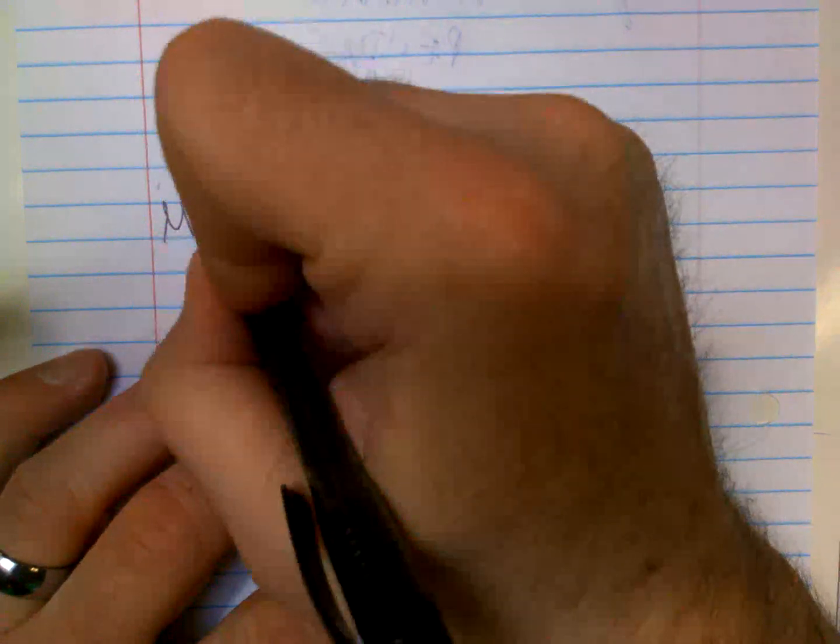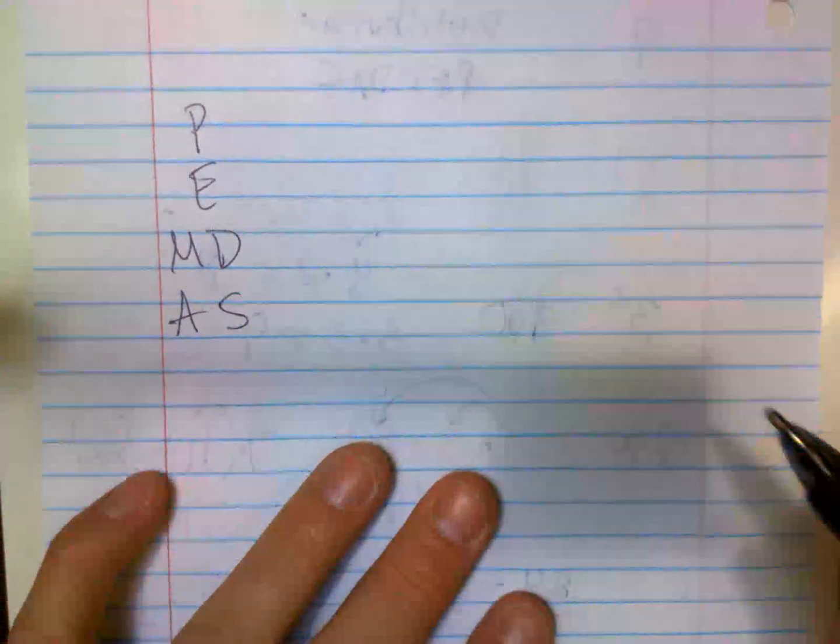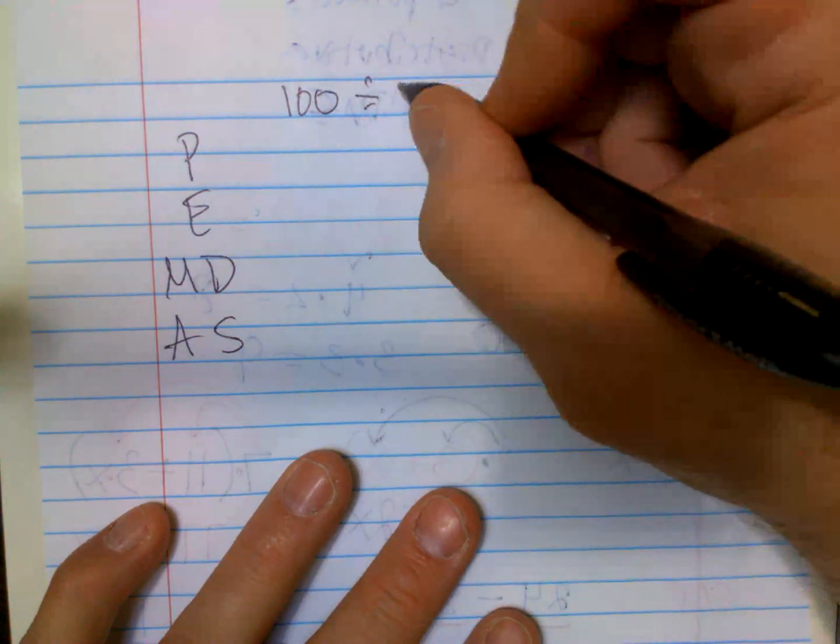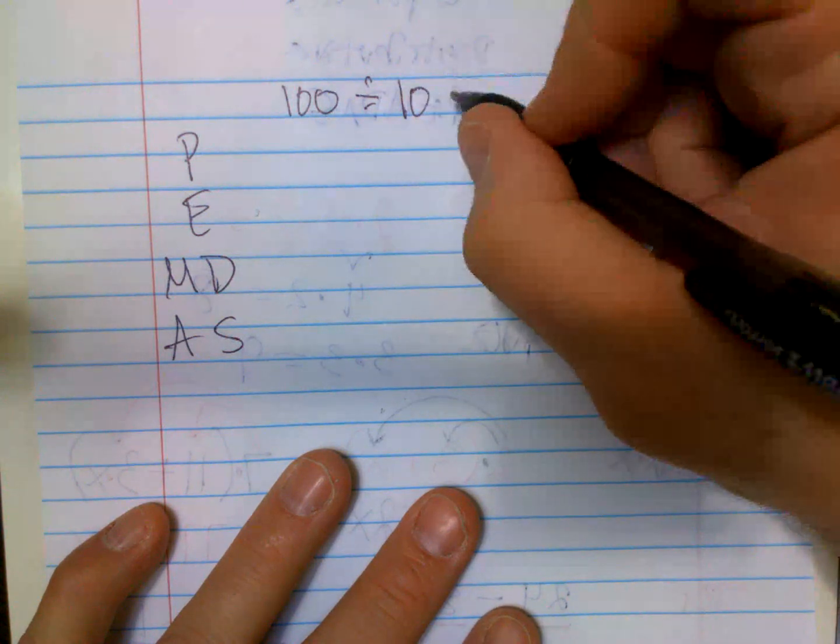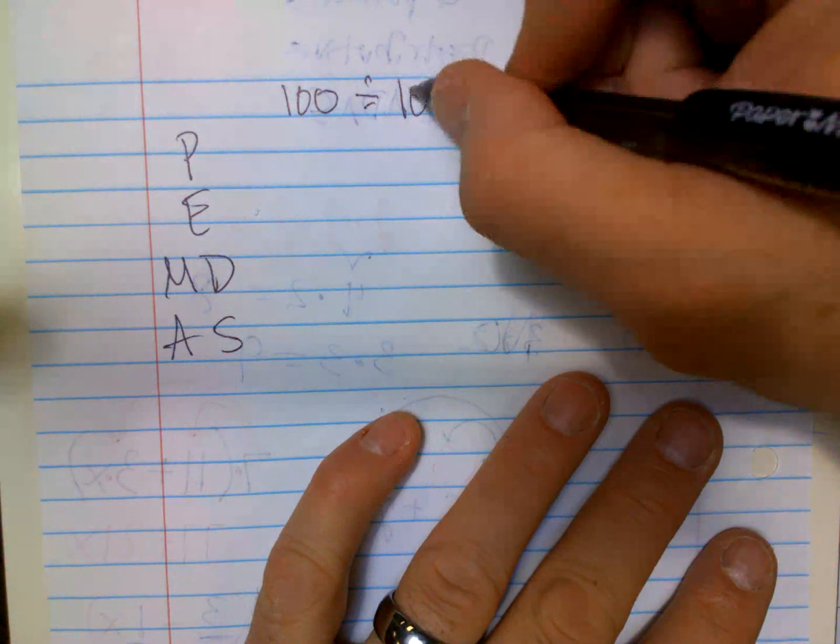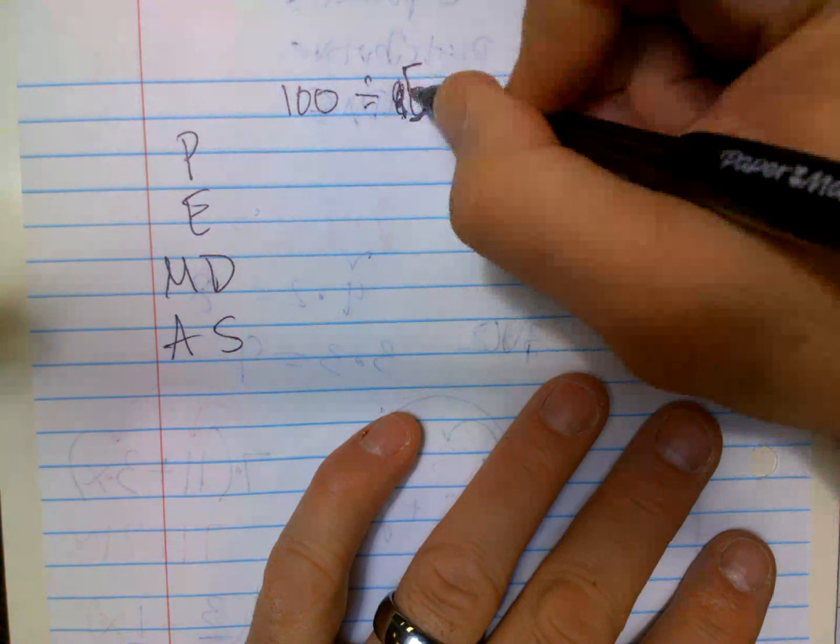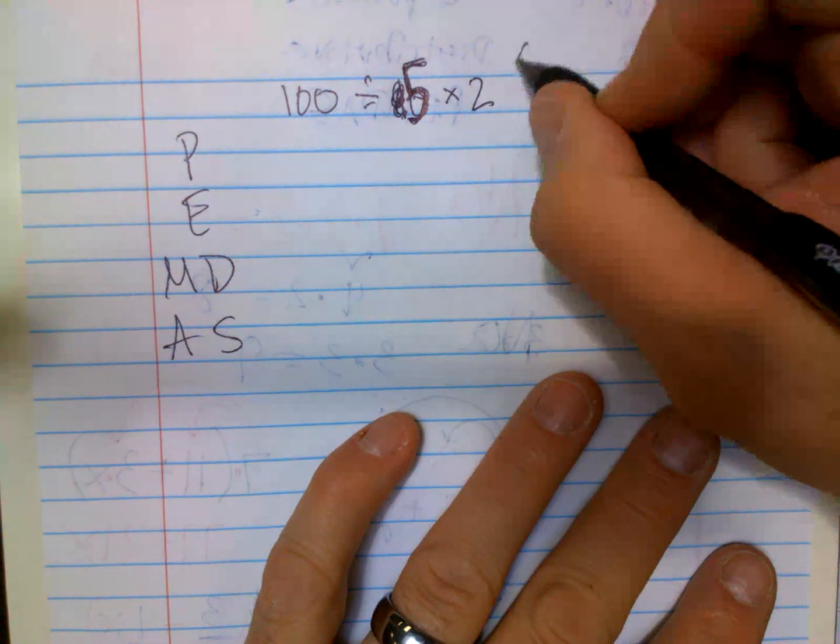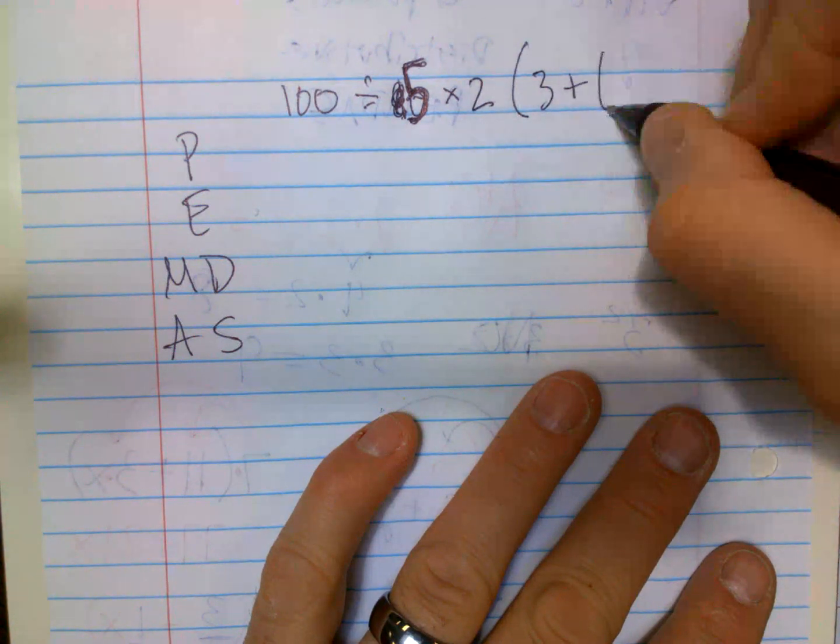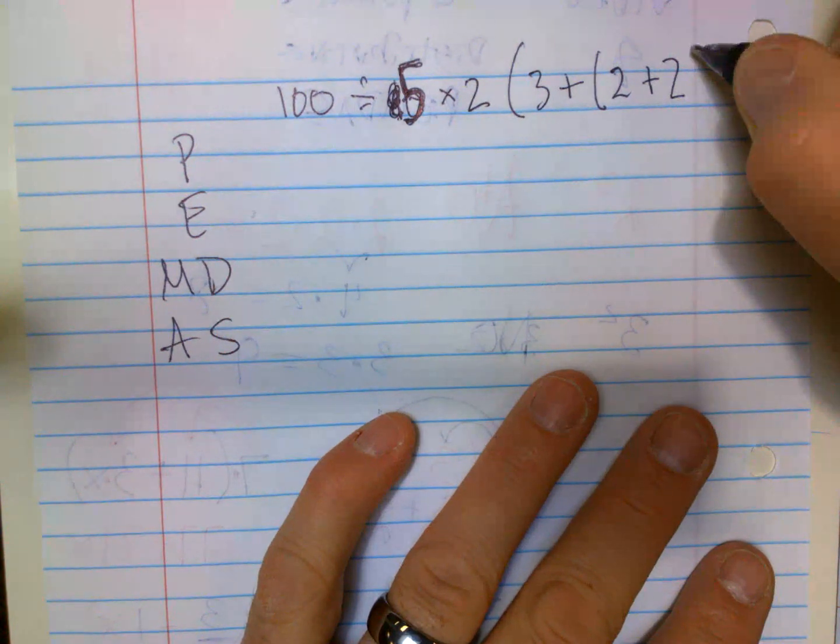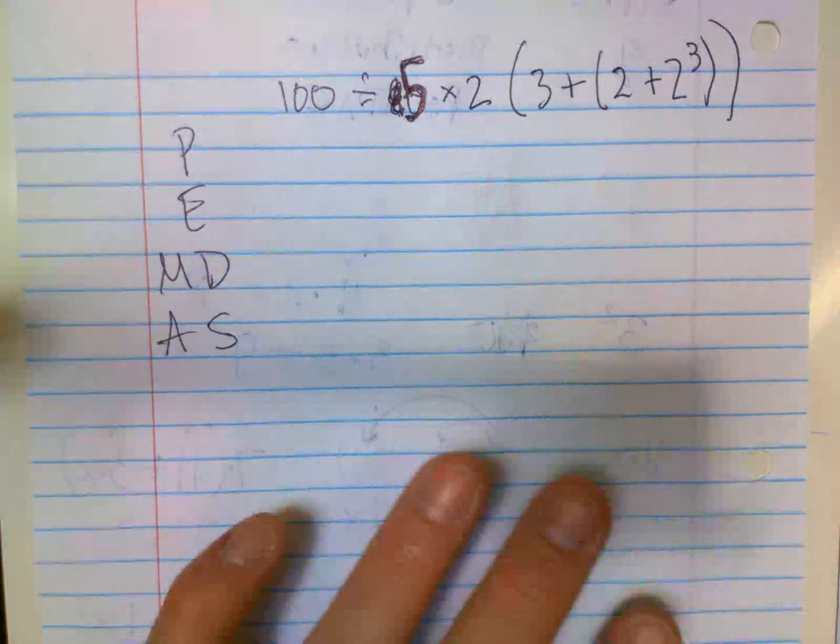PEMDAS. I would prefer you to, when you get a big long string of stuff here and you got like 100 divided by... I want to, for the sake of, I want to change this to 5. Try and do something to get your head to scream something. And then we have parentheses, 3 plus 2 plus 2 to the third.